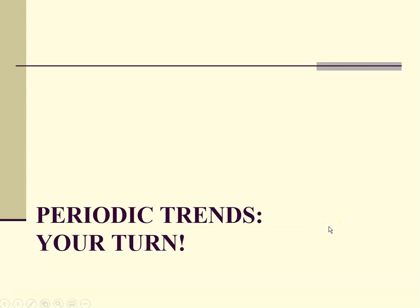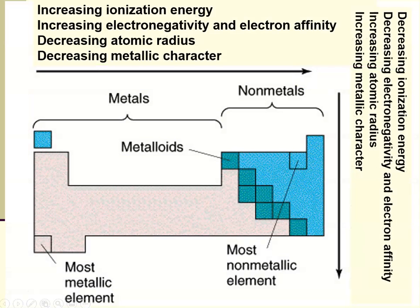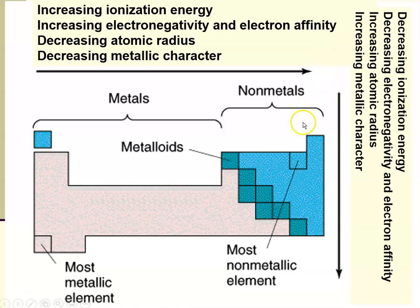So I'm going to call this your turn. We're going to start off by reminding ourselves that as we go from left to right across a row or period, ionization energy, electronegativity, and electron affinity increase, and radius and metallic character decrease. And as we go from top to bottom, ionization energy, electronegativity, and electron affinity decrease, and atomic radius and metallic character increase. The most non-metallic element would be fluorine, and the most metallic element would be francium.